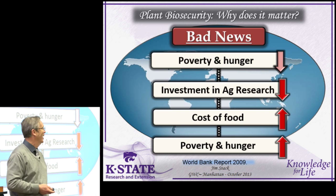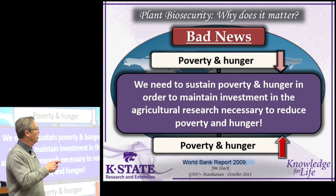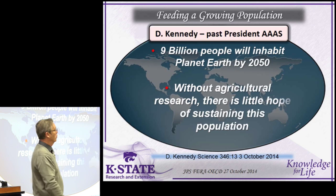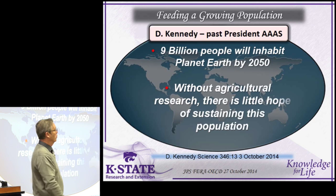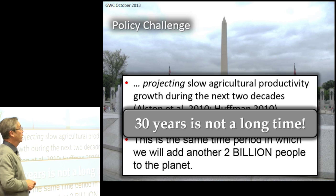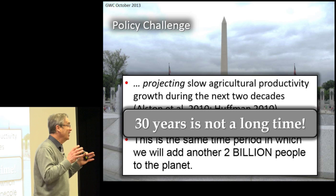So the way we are currently structured, we need to sustain poverty and hunger in order to maintain investment in the agricultural research necessary to reduce poverty and hunger — I hope that doesn't make sense to anyone. The past president of the American Association for the Advancement of Science said: 9 billion people will inhabit planet Earth by 2050, and without agricultural research there is little hope we can feed them. We're predicting very slow growth in agricultural productivity in the same period of time we're going to add 2 billion people to the planet. 30 years is not a long time.